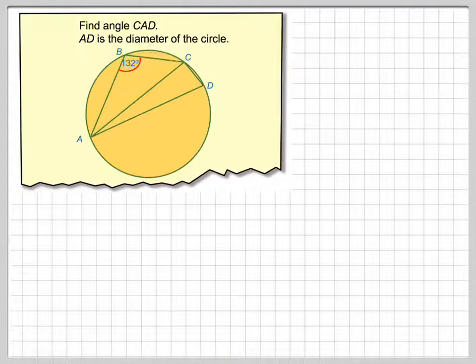Find angle CAD. AD is the diameter of the circle.